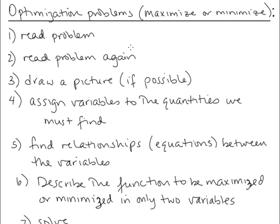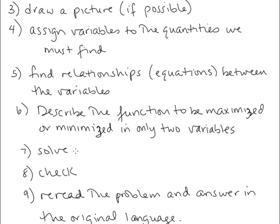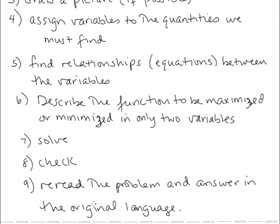We're going to read the problem, draw a picture if possible, and assign variables to all the quantities we must find. We want to find relationships — that is, equations — between the variables. We want to describe the function to be maximized or minimized in only two variables. We want to solve, finding the maximum or minimum, then check, and reread the problem and answer in the original language.